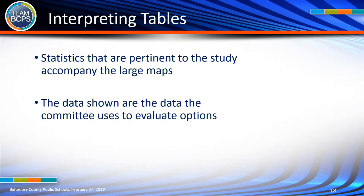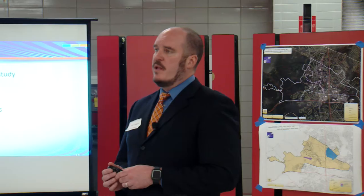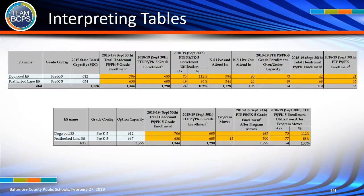We have statistics posted on large paper along with the maps — the same information the committee has been looking at and relying upon as they consider these draft options. A quick review: the tables show information about enrollment, the capacity of the building, how many students are coming in from out of zone, how many students are leaving, and the head count versus enrollment with FTE as it relates to preschool. Committee members, staff, or consultants would be happy to help interpret for you.